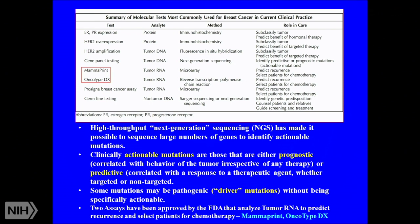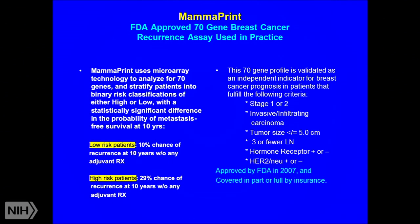The MammaPrint assay uses microarray technology to analyze 70 genes, placing patients in either a low-risk or high-risk category for recurrence. Low-risk patients have a 10 percent chance of recurrence at 10 years; high-risk patients have a 29 percent chance at 10 years. Approved in 2007 and covered by insurance, it was validated by a study showing that high-risk patients receiving only endocrine therapy had 76 percent distant disease-free survival, versus 88 percent for those receiving both endocrine therapy and chemotherapy — a 12 percent absolute benefit from adding chemotherapy.